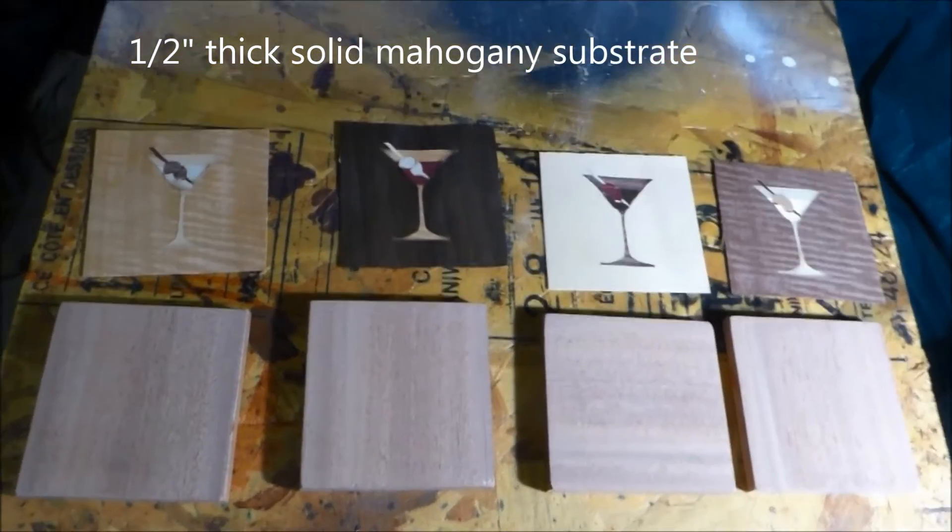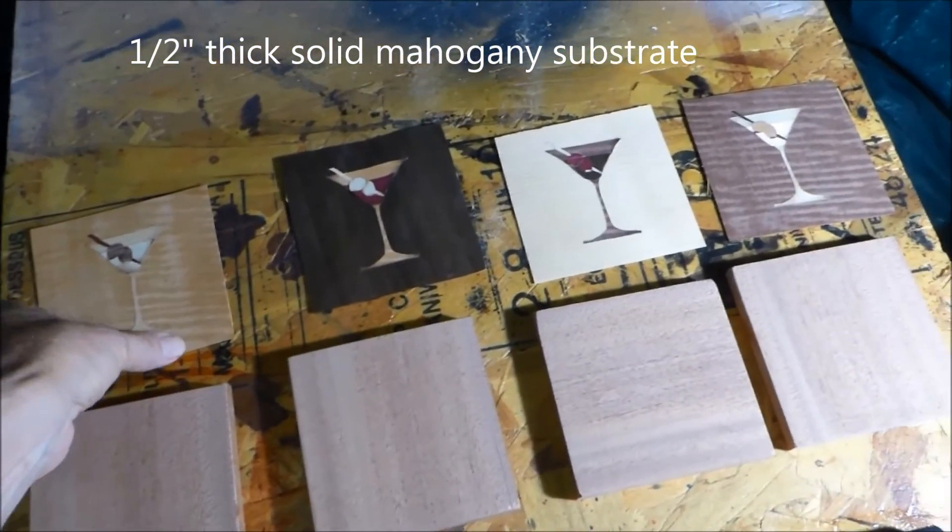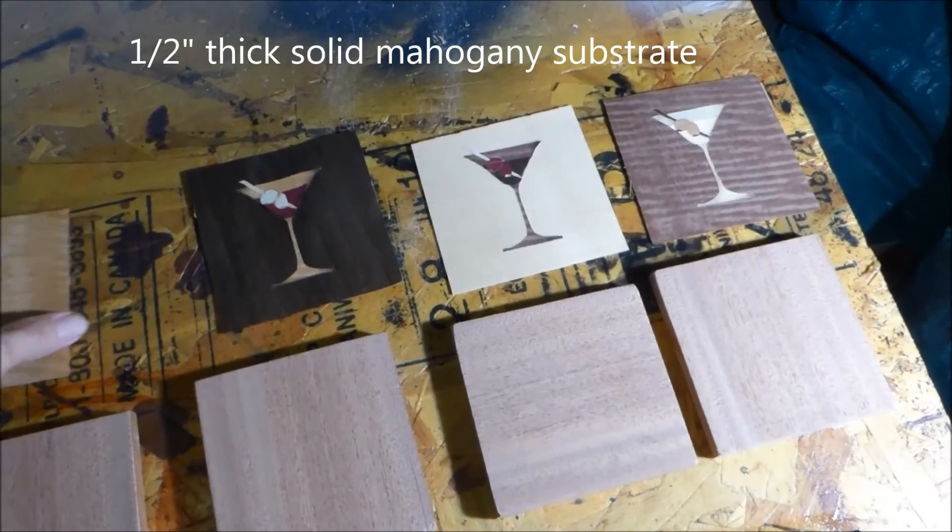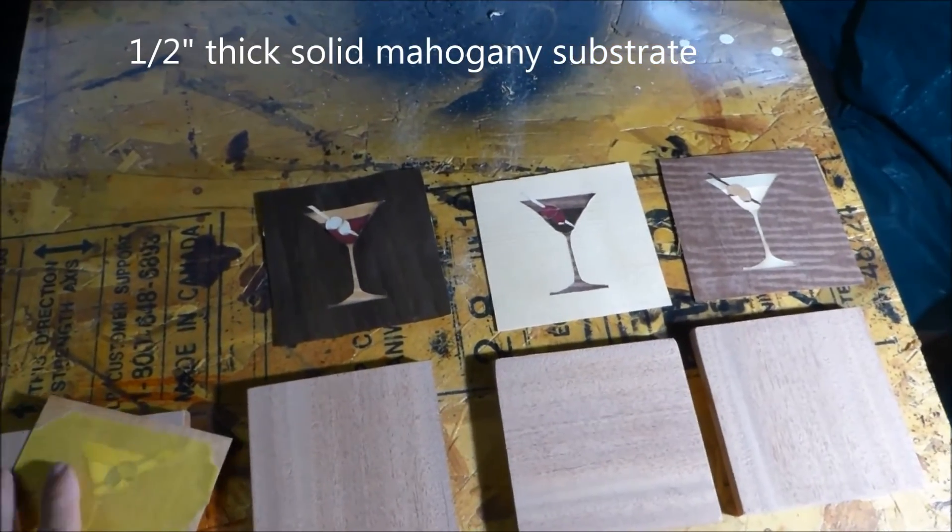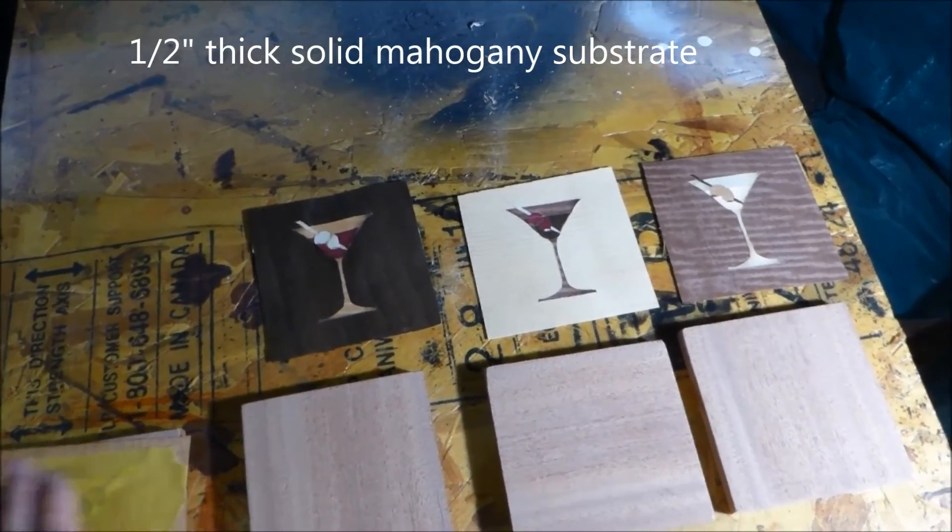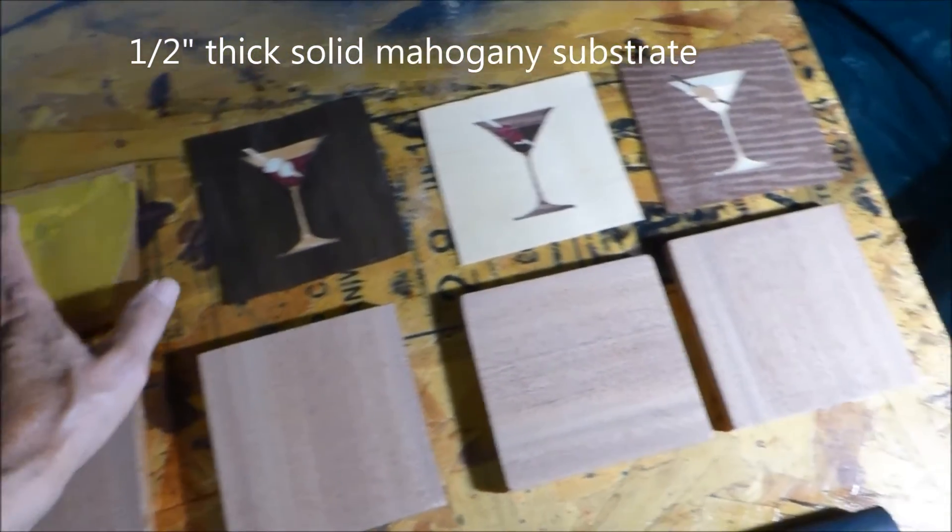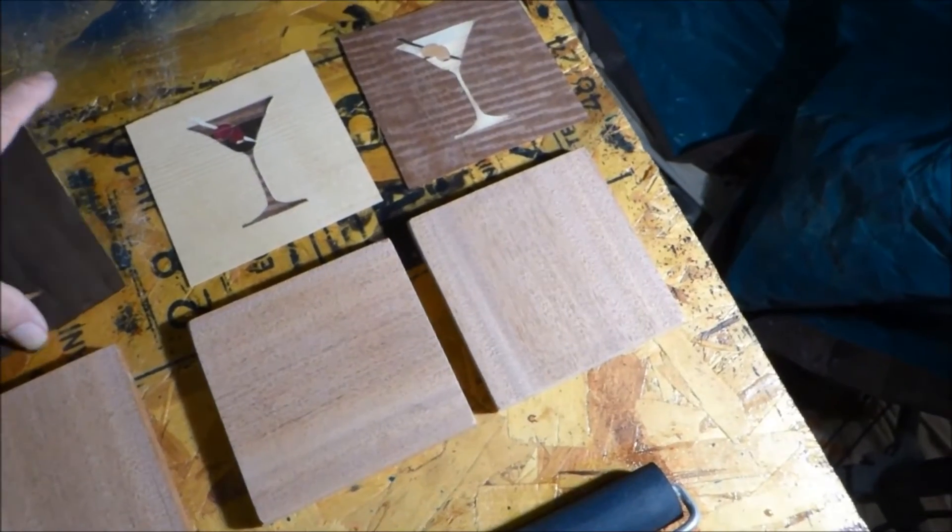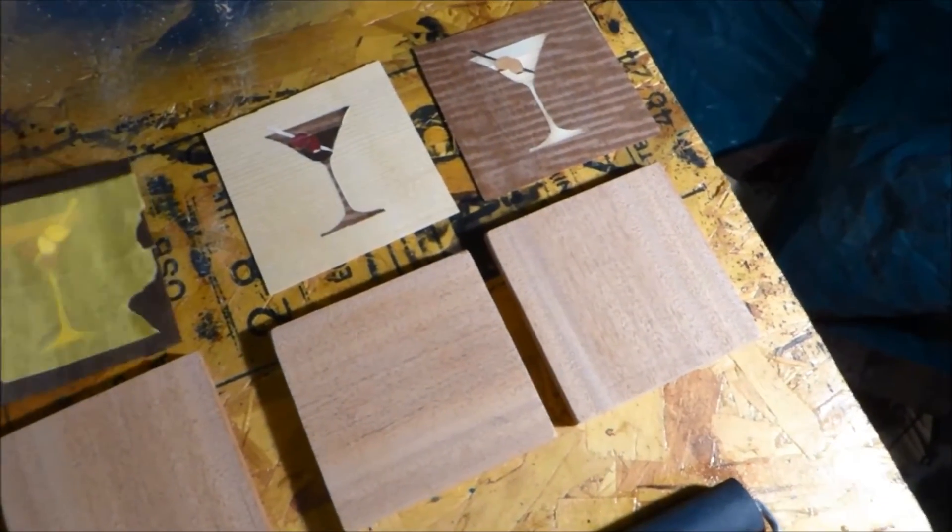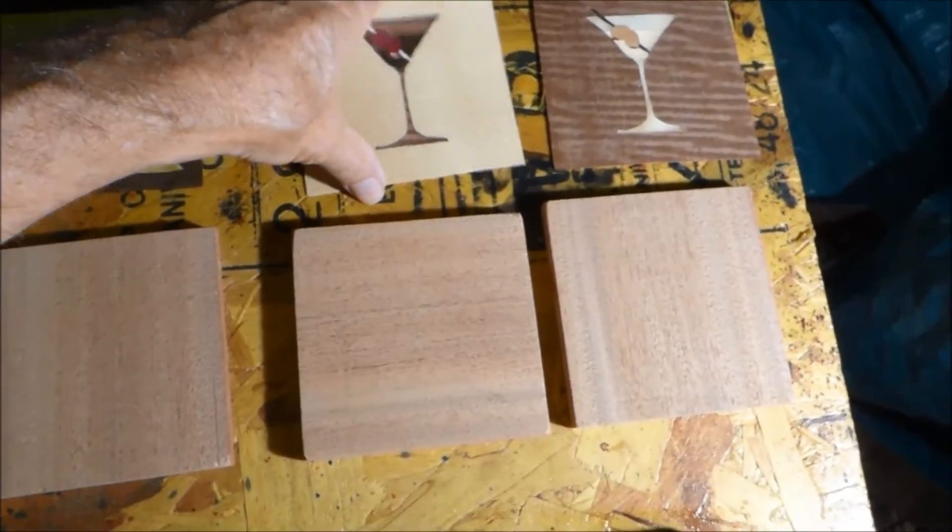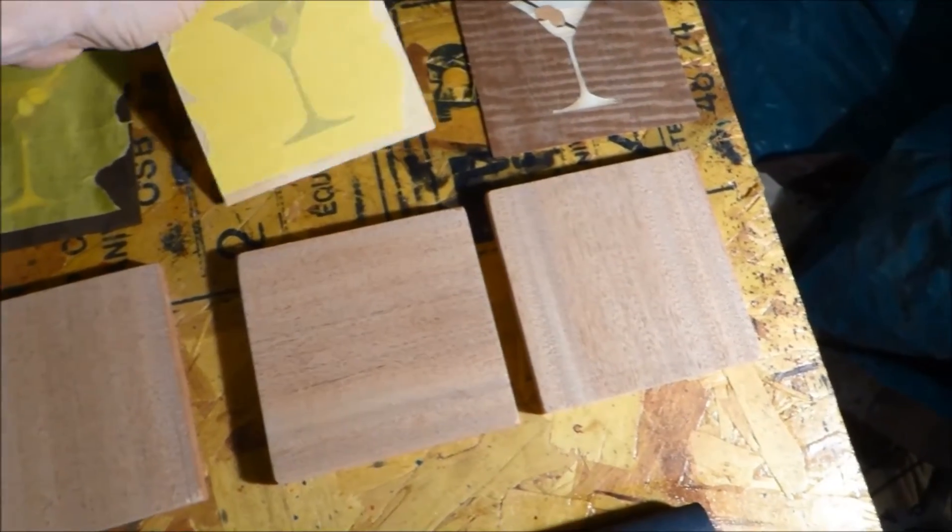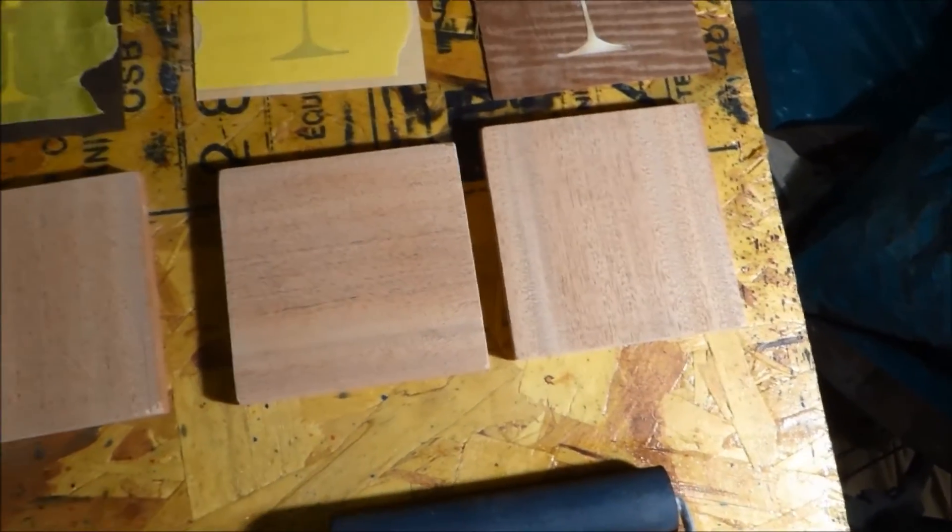Now we need something to glue the veneer to. MDF or plywood are the most commonly used. But in this case, we're actually using solid wood. I'm using half-inch solid mahogany here because I'm going to want to expose that wood on the edges when we're done. Now, when we glue down, the tape needs to be pointed up. The tape is the show side. So make sure that's the way it's glued down with the tape up. I've sized these to be about a half-inch oversize because at the end, we'll trim them down to size.